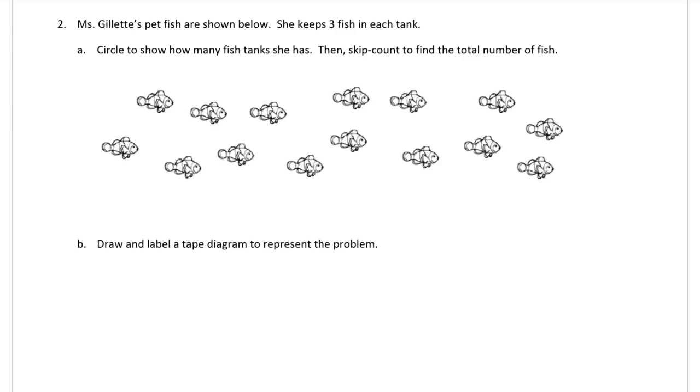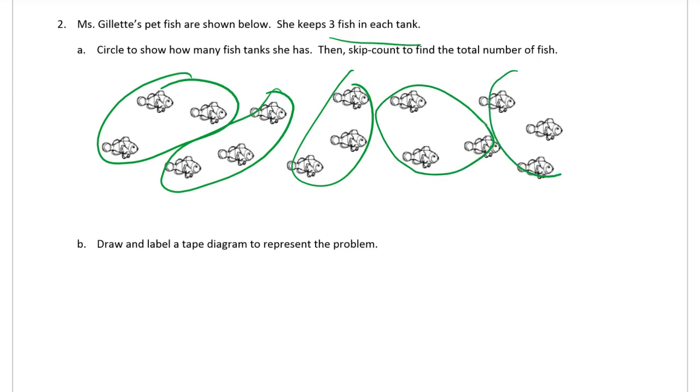Ms. Gillette's pet fish are shown below. She keeps 3 fish in each tank. Show how many fish tanks she has. There's 3 fish, there's another tank, another tank, another tank. Skip count: 3, 6, 9, 12, 15. There are 15 fish.